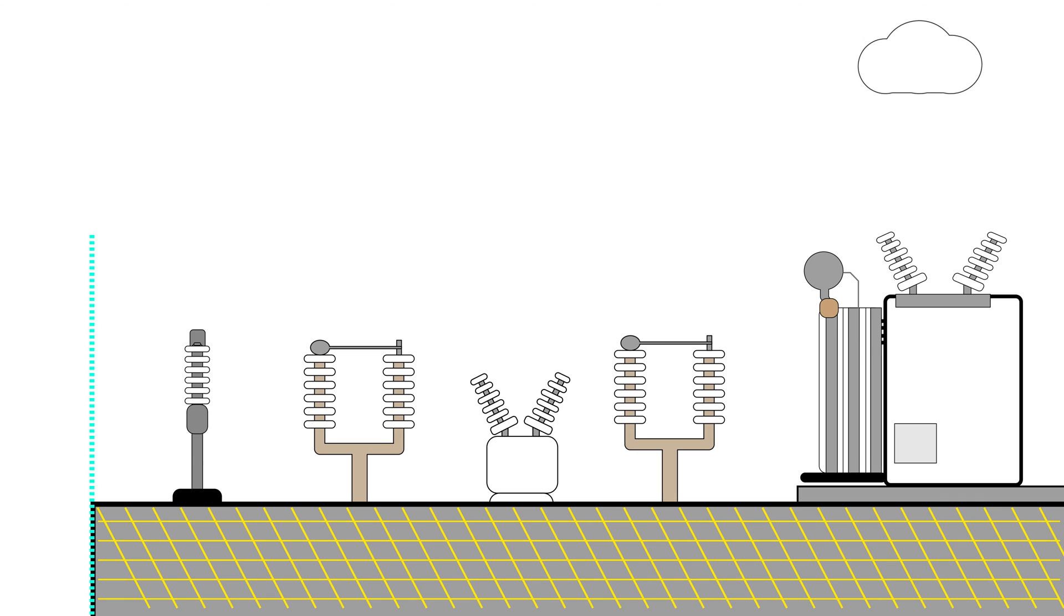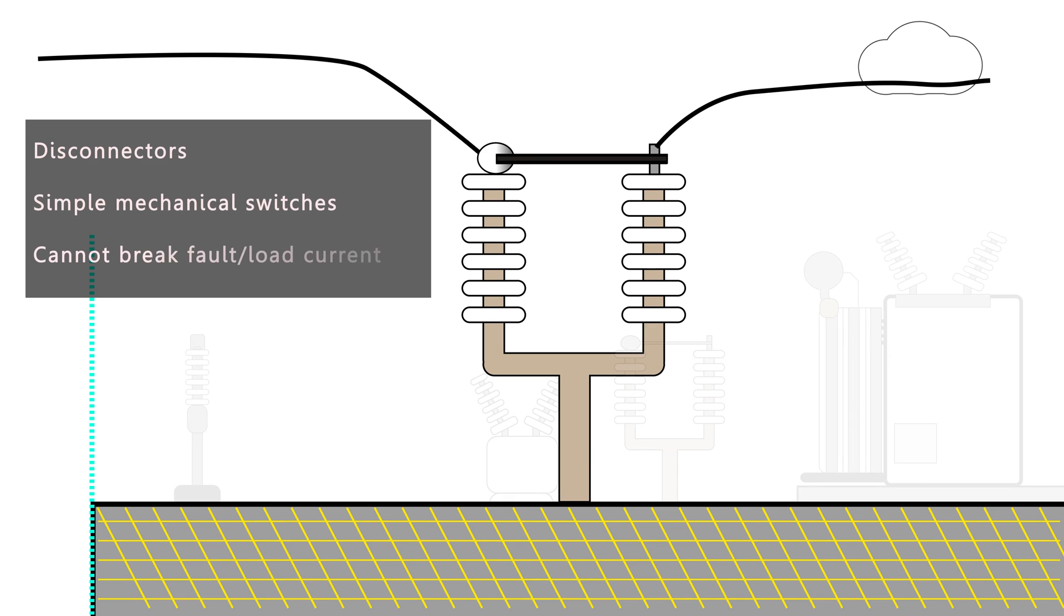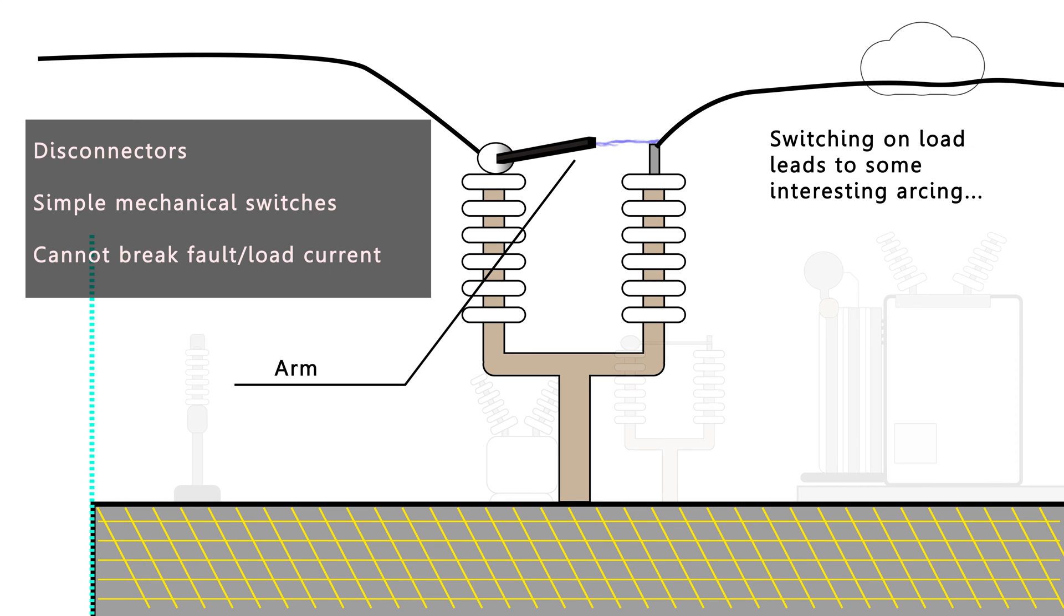The next one we'll look at is called the disconnector. The disconnector is a very simple asset in construction. It's made up of a swinging arm, so this is just really a mechanical switch. Now disconnectors are cheap, they are reliable, but they're not able to break load current or fault current. So that's one of the big weaknesses of a disconnector. In fact, if you try to break load current or fault current, you just get a giant arc. So it's a very specialist job to break fault current and load current.